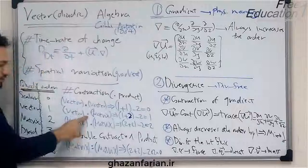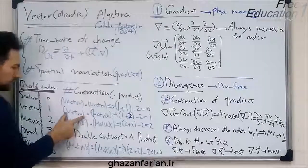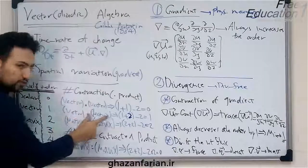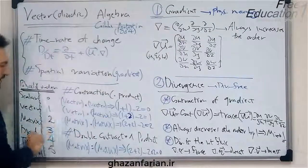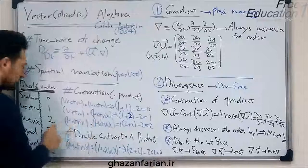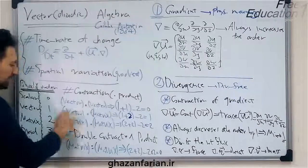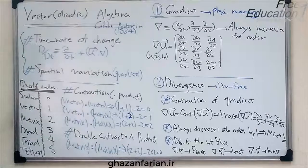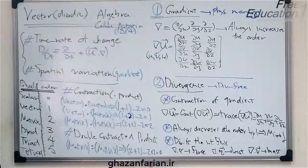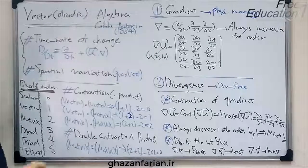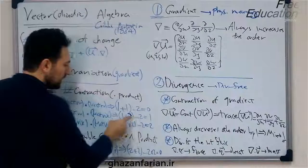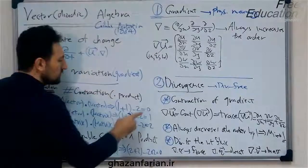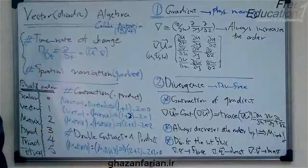If you perform the dot product of a vector and a matrix, the order of the vector is one and the order of the matrix is two, so the sum of orders is three. When you perform the contracted product, the order of the result is three minus two, or unity — a vector.